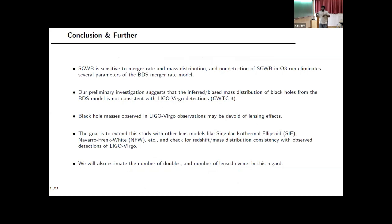To summarize: some groups claimed LIGO-Virgo detections contain lensed black holes, arguing that since galactic black holes are 10–15 solar masses but LIGO detects many at 35–40 solar masses, lensing must be responsible. They proposed the BDS merger rate model. Using the stochastic gravitational wave background, we eliminated several model parameters. Then through lensing simulations — taking lighter black holes, applying magnification, and comparing the resulting distribution to LIGO detections — we find the biased mass distribution is not consistent with LIGO-Virgo observations. The black holes observed in LIGO-Virgo are genuinely 35–40 solar mass objects merging, not lighter black holes made to appear massive by lensing.